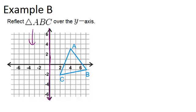So to do that exactly correctly, you should take each of the three vertices and figure out how far away they are from the Y-axis. So A is 1, 2, 3, 4 units away from the Y-axis, so you have to count four units on the other side to find where A' should go. And then you'll do the same thing for B and for C.